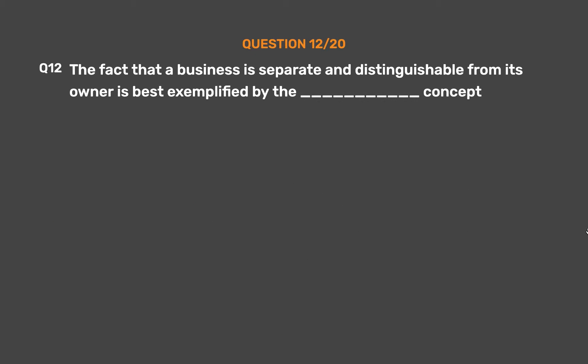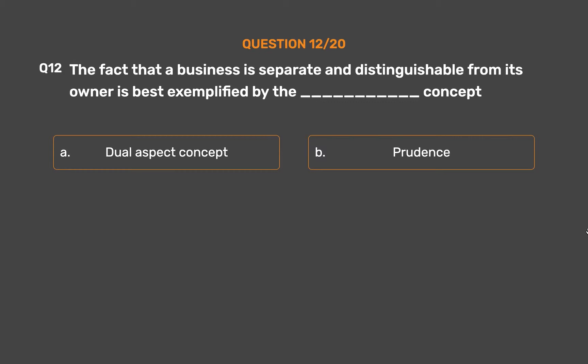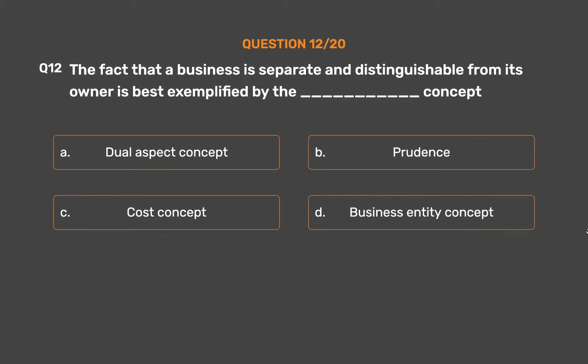Question No. 12: The fact that a business is separate and distinguishable from its owner is best exemplified by which concept? Option A: Dual Aspect Concept. Option B: Prudence. Option C: Cost Concept. Option D: Business Entity Concept.